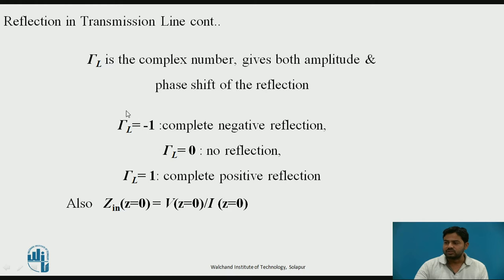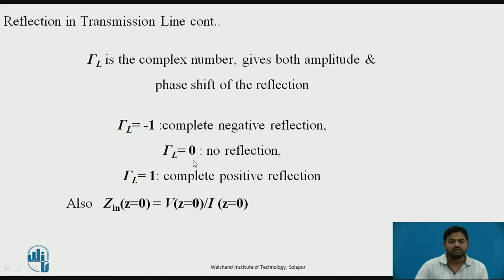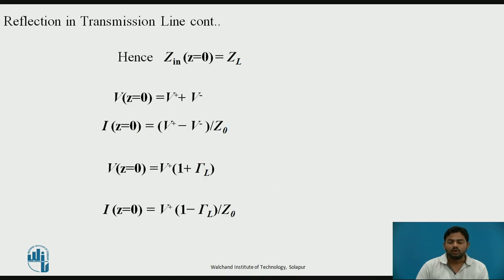By putting z equals zero into the equations, you will get the reflection coefficient. It is a complex number giving both phase and magnitude. When it is minus one, there is complete negative reflection — the incident and reflected waves are 180 degrees phase shifted. When the reflection coefficient is zero, there is no reflection — the perfectly matched condition. When the reflection coefficient is one, you get complete positive reflection. Putting z equals zero into the input impedance equation gives the load impedance Z-L.